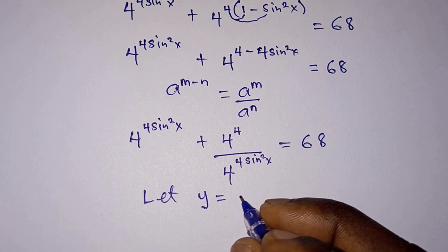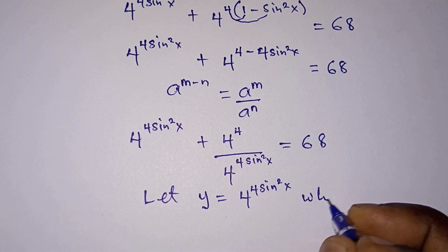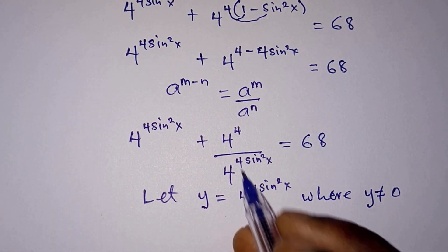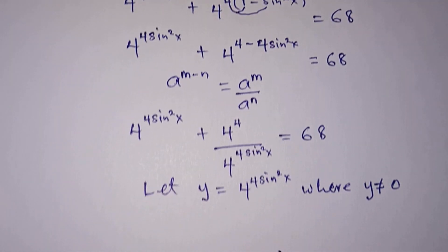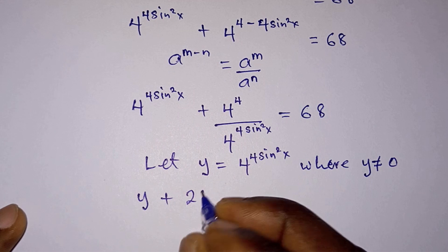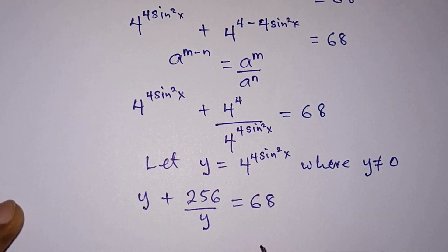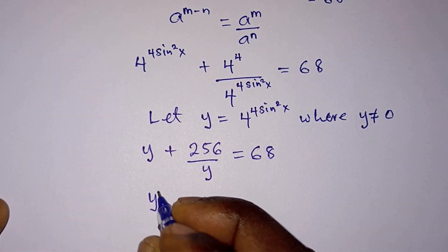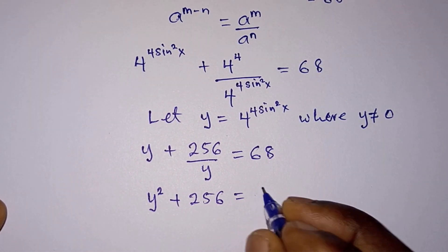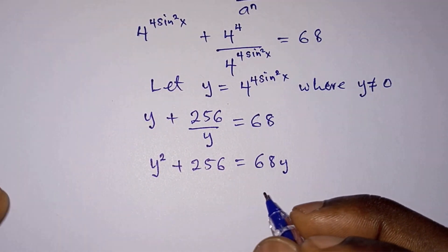This gives 4 to the power 4 sine squared x plus 4 to the power 4 divided by 4 to the power 4 sine squared x, equals 68. We let y equal 4 to the power 4 sine squared x, where y is never equal to 0. The equation becomes y plus 256 divided by y equals 68. Multiplying through by y gives y squared plus 256 equals 68y.